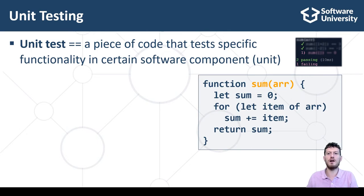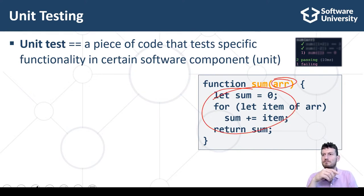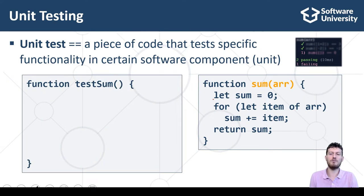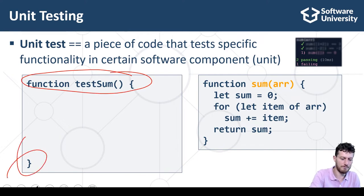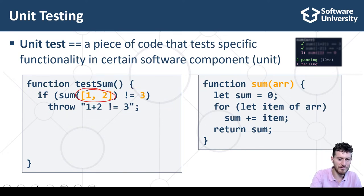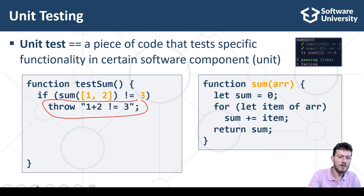Here is a simple example to illustrate the idea of unit testing. We have a function which sums the elements of a given array of numbers. We want to test this function — not by hand — we want to write code which confirms that this function works correctly. We write a function to hold the test cases. This is the first test case, the first check: it checks whether the sum of the two array elements is 3.